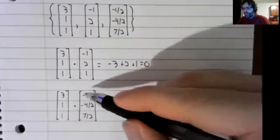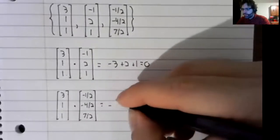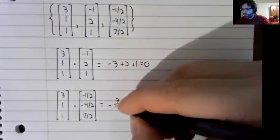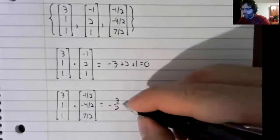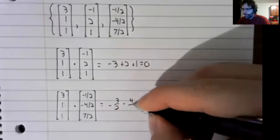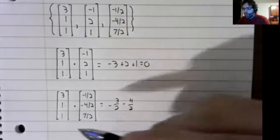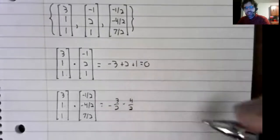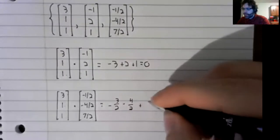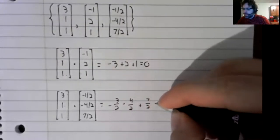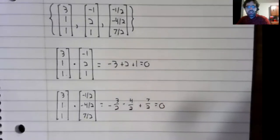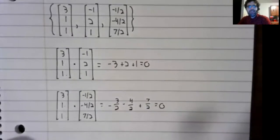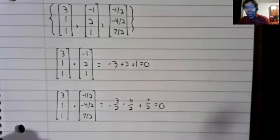Negative three-halves, negative four-halves, positive seven-halves, and that is indeed zero-halves, which is zero.